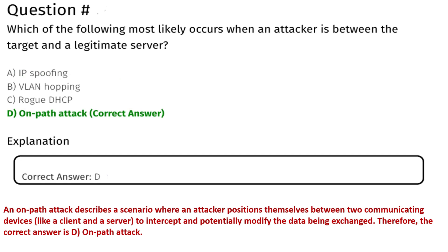The next question is: which of the following most likely occurs when an attacker is between the target and a legitimate server? Option A: IP spoofing, Option B: VLAN hopping, Option C: rogue DSCP, Option D: on-path attack. The correct answer is Option D, on-path attack.